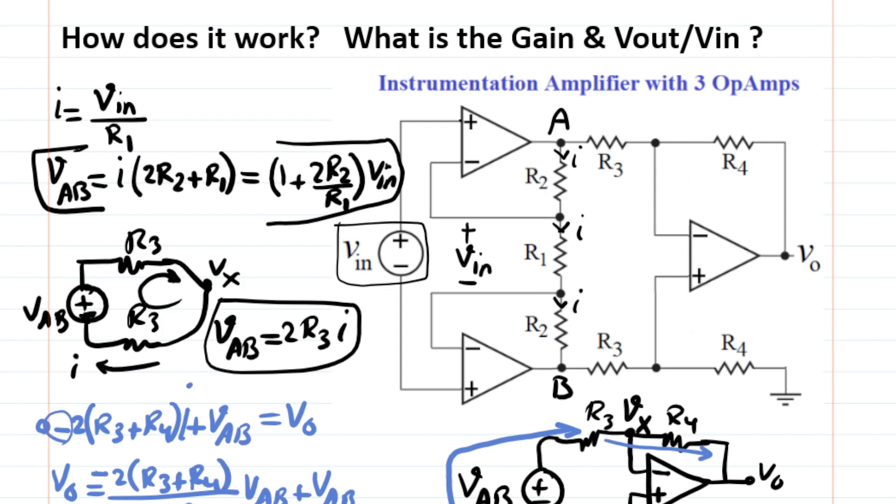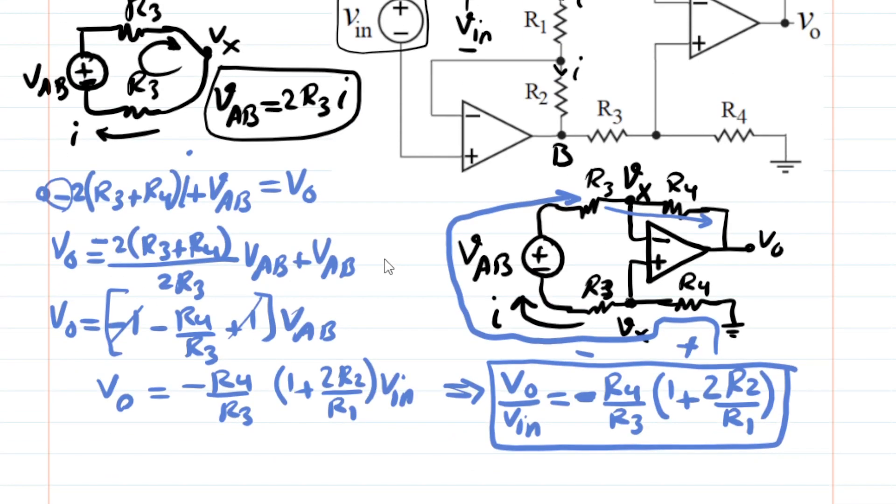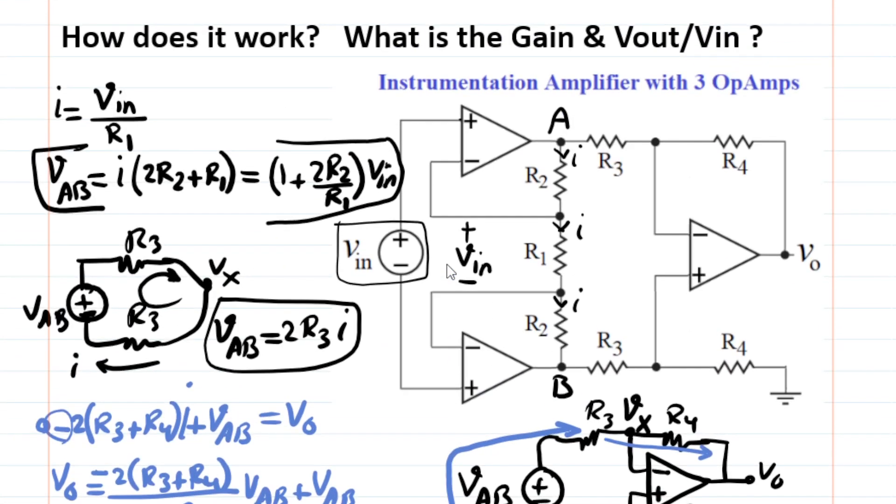The nice thing about instrumentation amplifier versus this simplified version is, in this simplified version, input source is not isolated from the R3 and R4 and their variation. But here, with existence of this input buffers or op-amps, input voltage source, which could be a very sensitive sensor, is actually isolated from the rest of the circuit, and the rest of the resistances in the circuit cannot affect the behavior, practically, affect the behavior and performance of that sensor. So that's the reason we would like to use the instrumentation amplifier in practice, actually. Hope this is helpful.